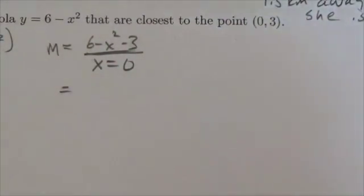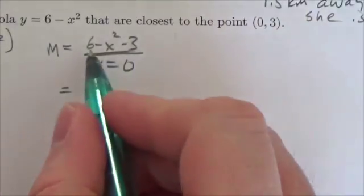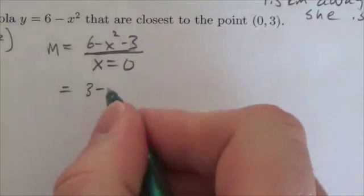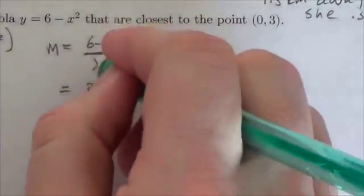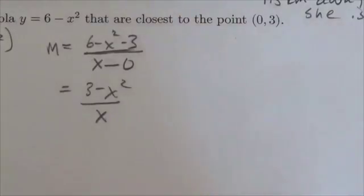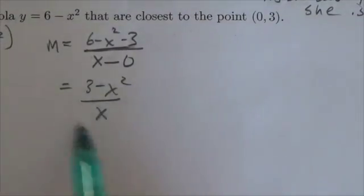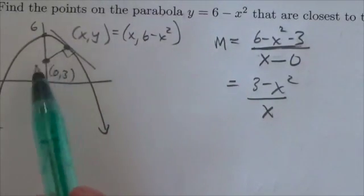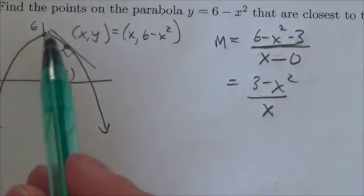Okay, and now I will simplify that. Six minus x squared minus three is just going to be three minus x squared, don't know why I put an equal sign underneath there either, that was just weird, all over x.